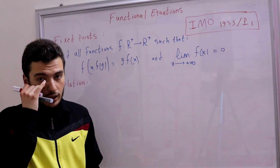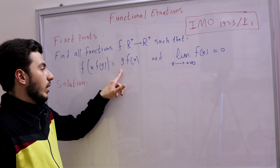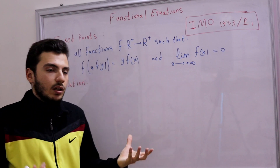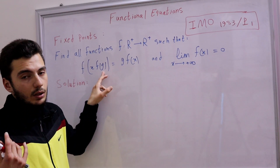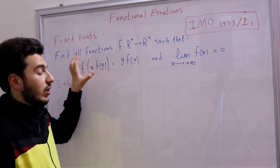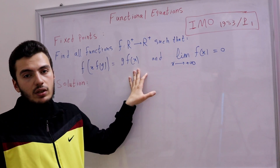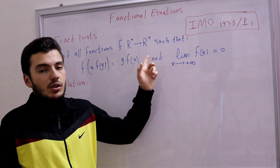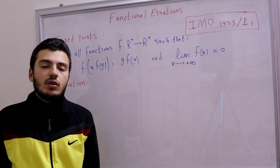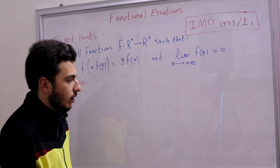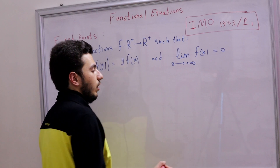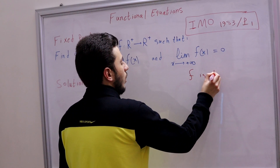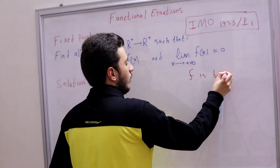What about injectivity? Assume f(a) = f(b) with a ≠ b. We substitute once with a and once with b — the left-hand side will be the same, so the right-hand side will be the same, meaning a equals b, since f(x) cannot be 0. So f is injective and surjective, meaning f is bijective.